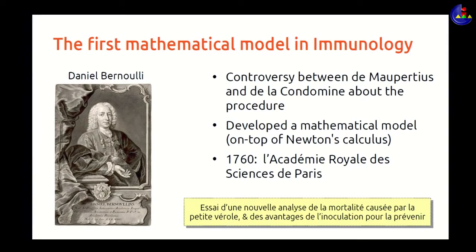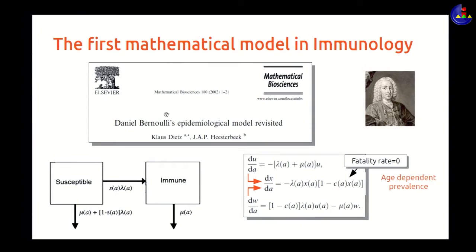Calculus was very popular in those decades, so Bernoulli tried calculus to solve this controversy. He prepared some notes and presented them at the Royal Academy of Sciences of Paris in 1760. This is a summary of his model — if you are interested, you can read a nice paper that summarizes the history and all the consequences of his work.